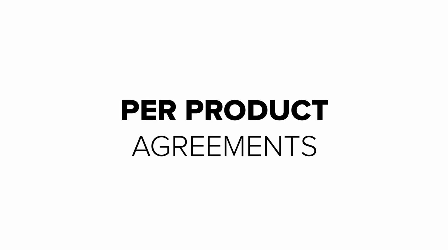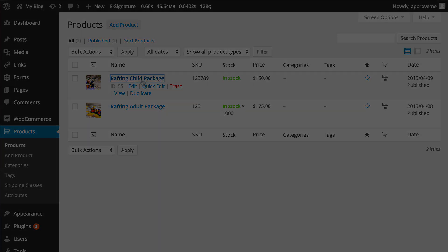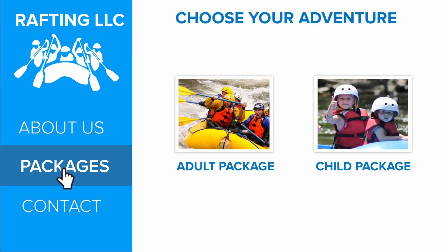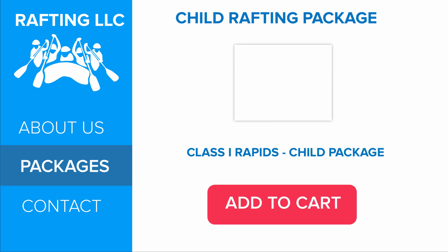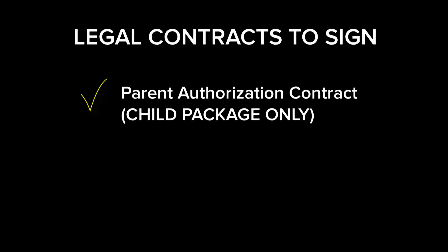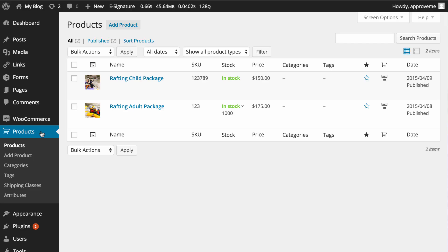The first option is we can assign a contract to a specific WooCommerce product. Let's say you're a whitewater rafting company and you sell rafting adventure packages. You might have an adult package and a child package. If a customer purchases a child package from your WooCommerce store, you most likely need a parent authorization form signed along with a release of liability form for all of your store adventure packages.